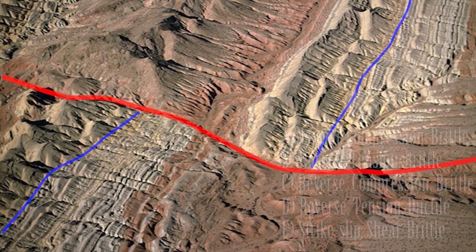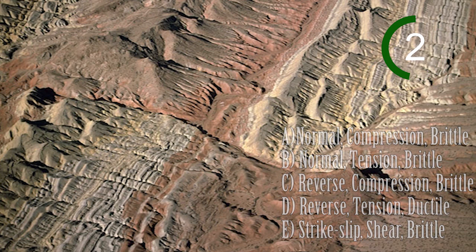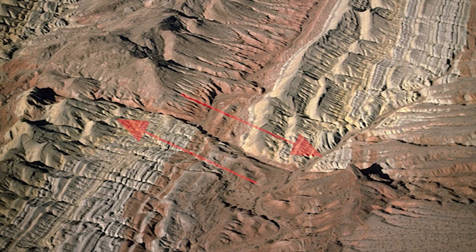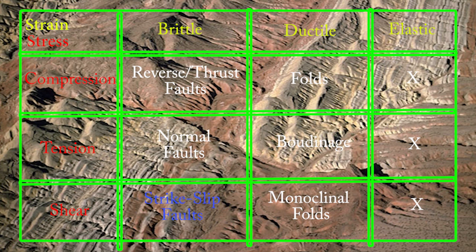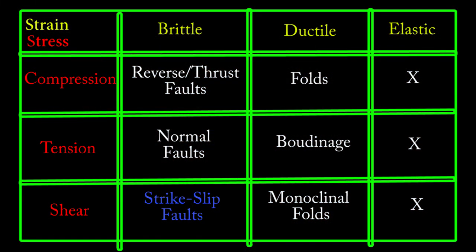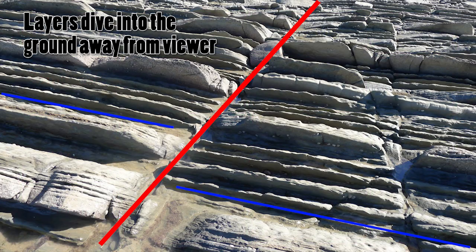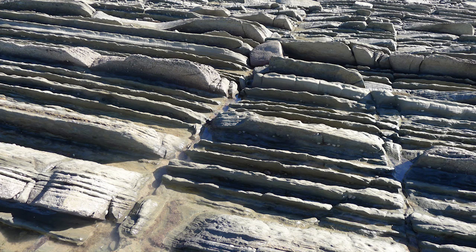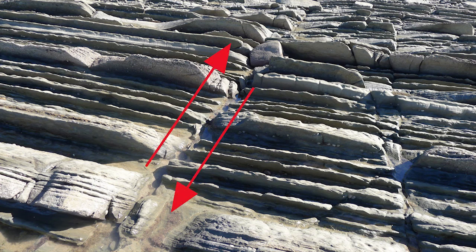And this? This is a right lateral strike-slip fault, with the other side from you always moving to your right when you face the fault, and it is caused by shear stress. I hope you're getting it drilled into your head that all faults are the result of brittle strain. I also hope you note that you can never get a normal fault with compression, or a reverse fault with tension, and neither can be made by ductile nor elastic strain, as all faults are due to brittle strain. Now, what kind of fault is this? Stop for a moment and think about the full three-dimensional picture.